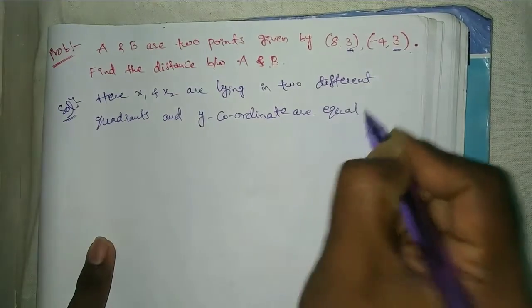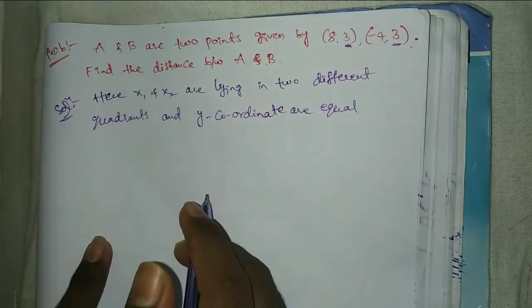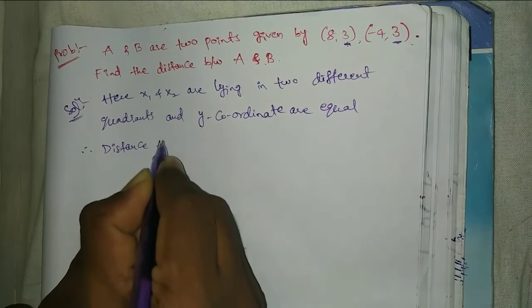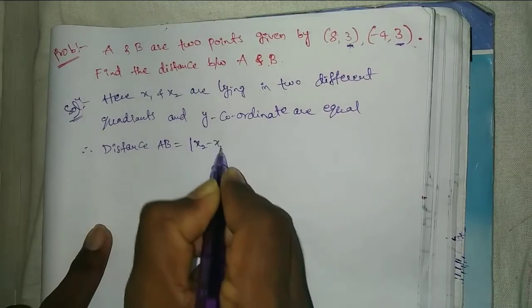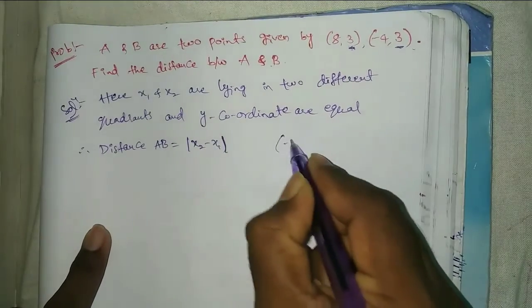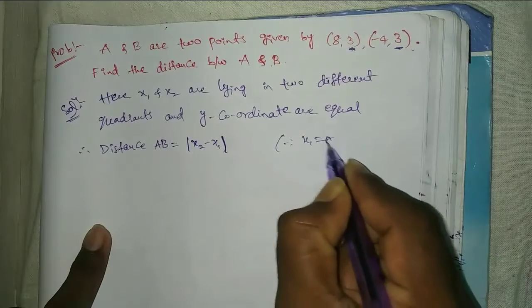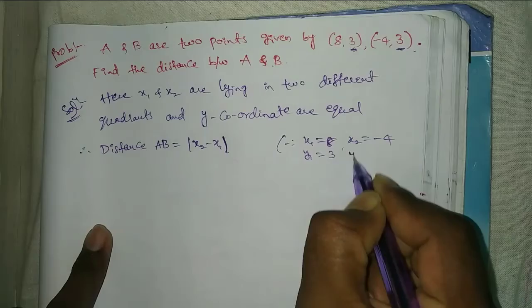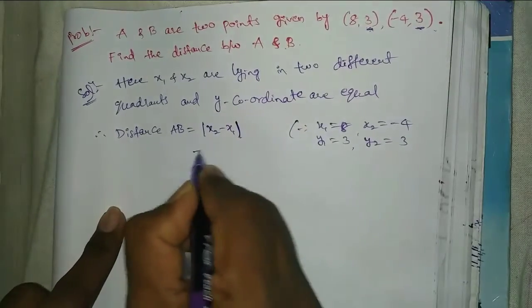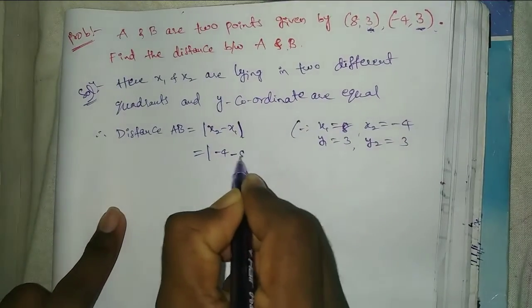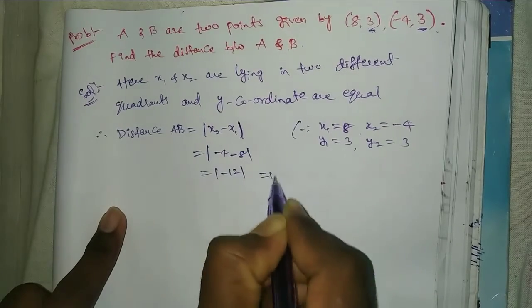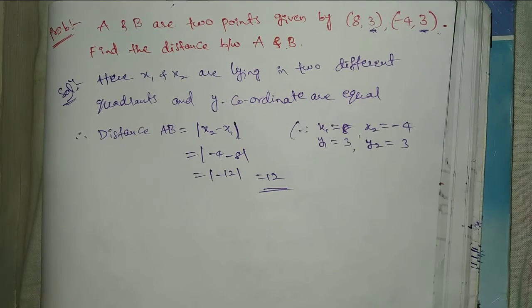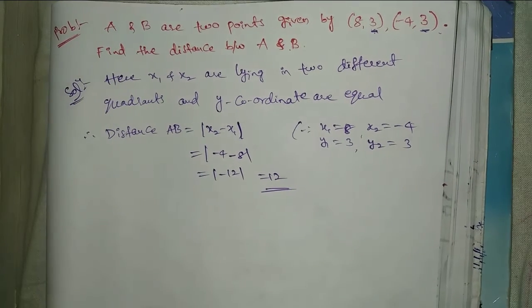Therefore, distance AB = |x2 - x1|. See here, x1 = 8, y1 = 3, x2 = -4, y2 = 3. That equals |-4 - 8| = |-12| = 12. Do you have any doubt, please comment. Please subscribe my channel, like and share. Thank you everyone.